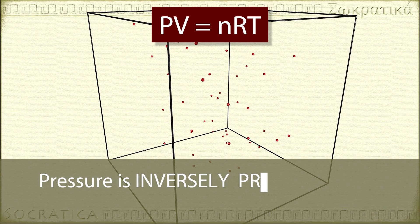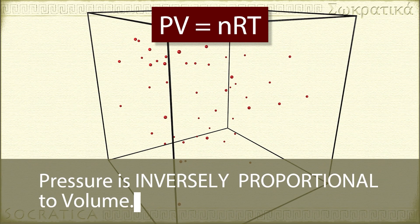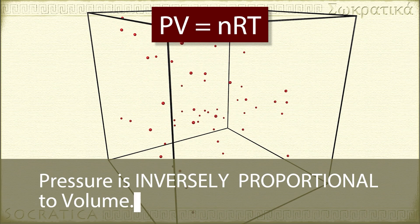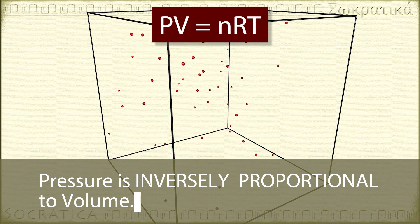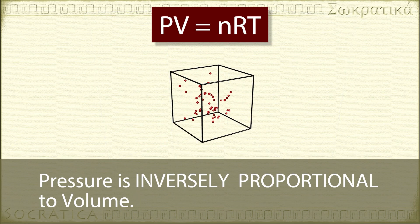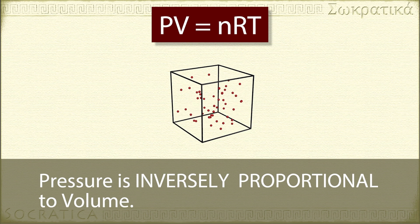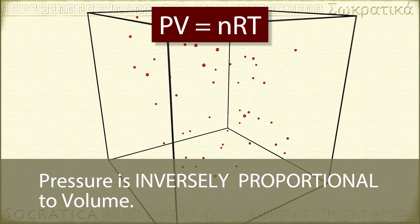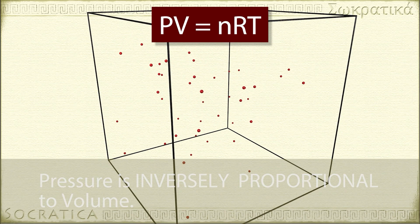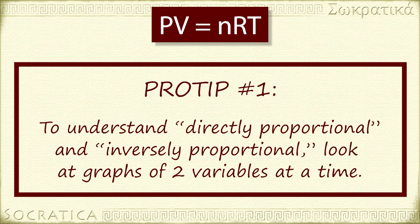Pressure is inversely proportional to volume. If you increase the size of the container, there will be fewer collisions per second. But if you compress the container and make the volume smaller, the particles will hit the sides more often per second — lower volume, higher pressure; higher volume, lower pressure. If you find the directly proportional or inversely proportional concepts confusing, I recommend you spend some time thinking about the graphs of these variables, graphing just two variables at a time.